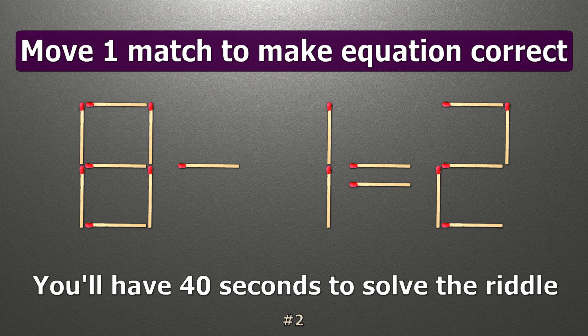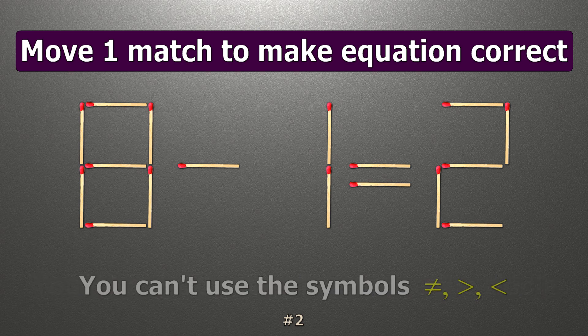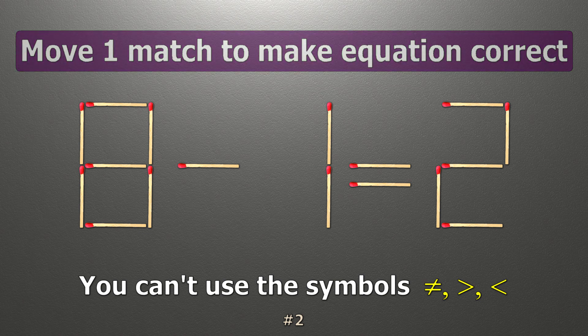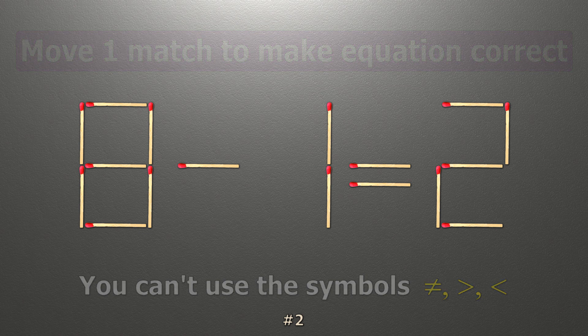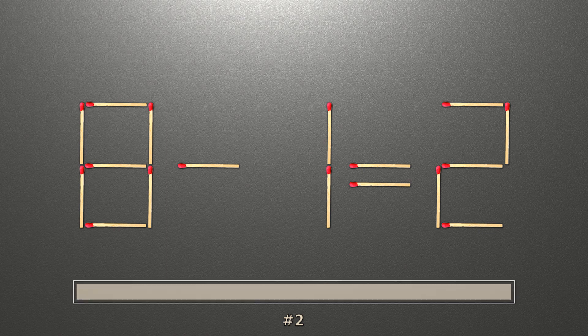We have the equality 8 minus 1 equals 2. Our equality is wrong. We need to move one match to make our equality correct.